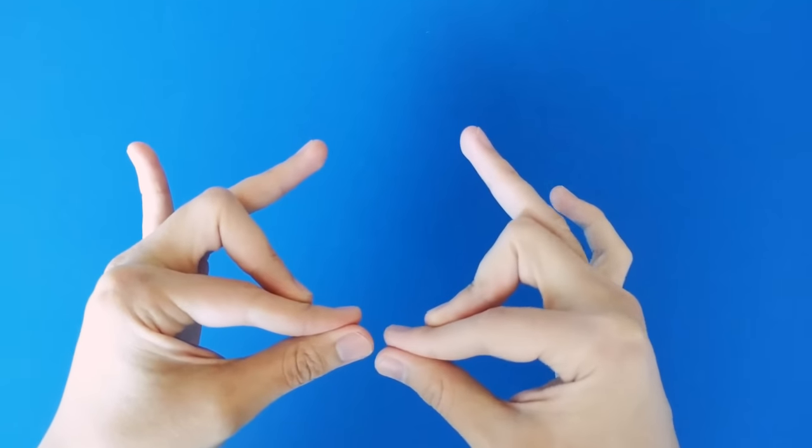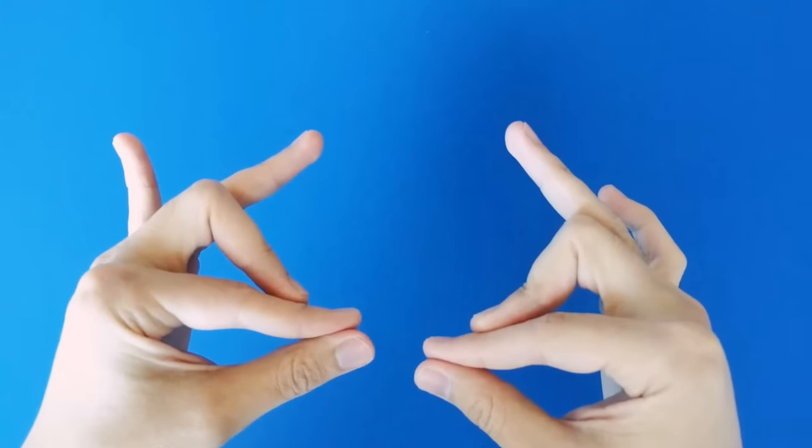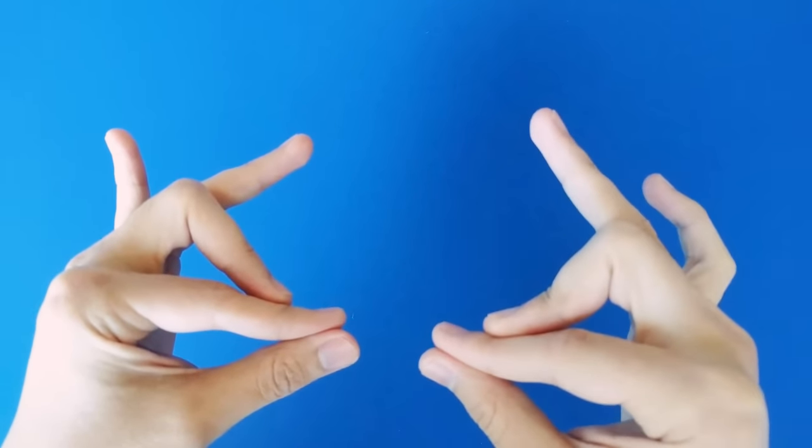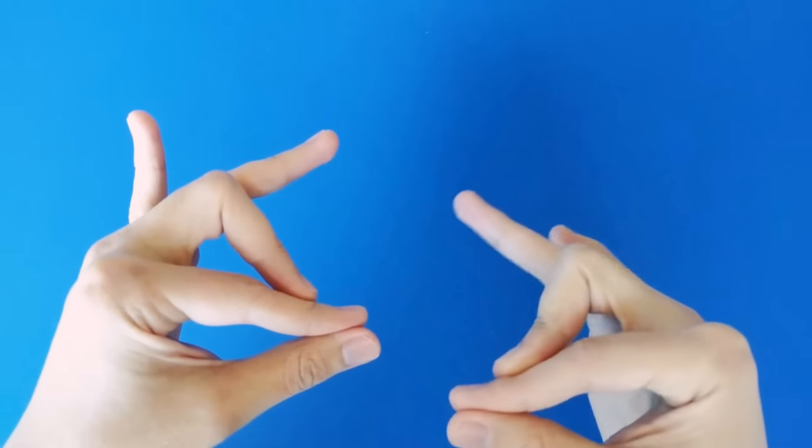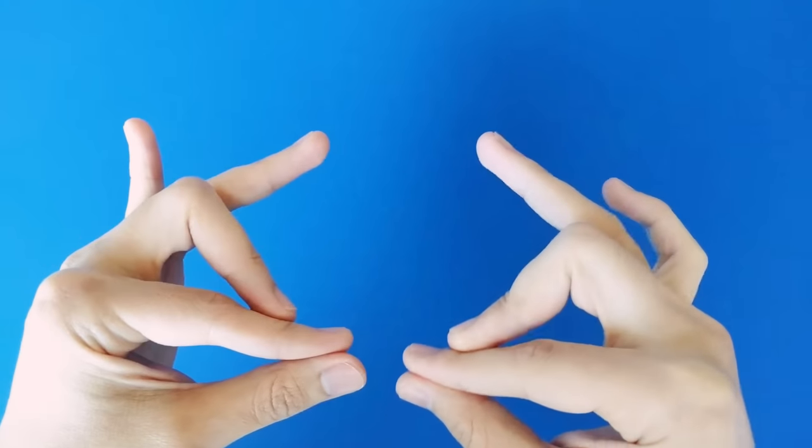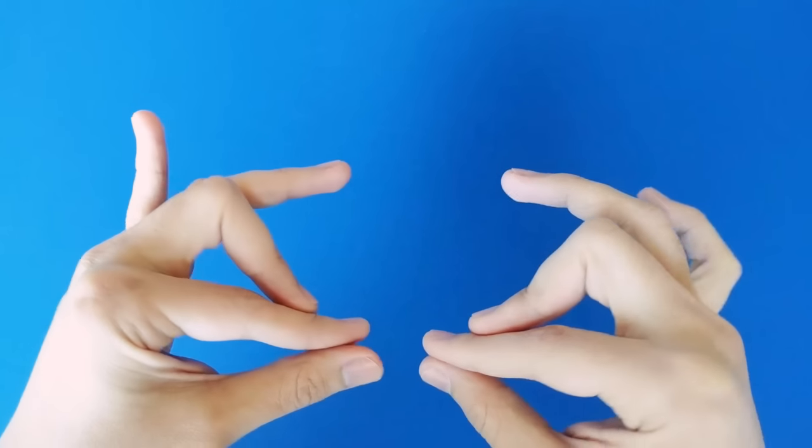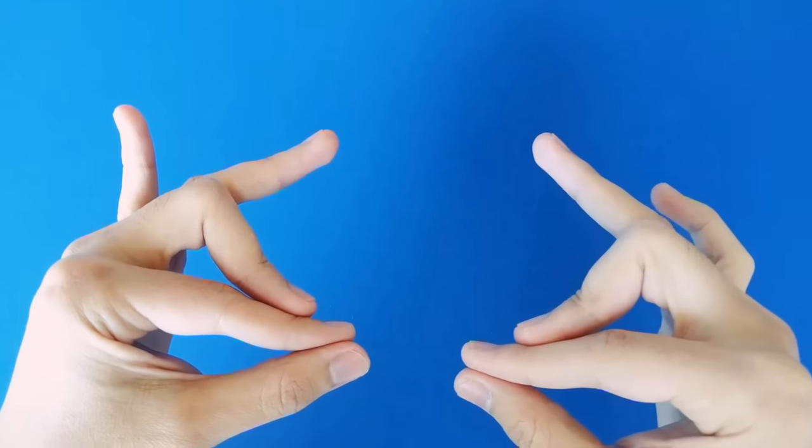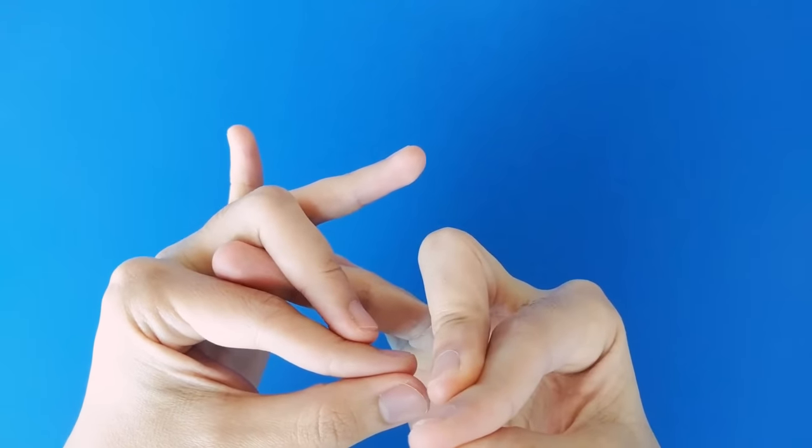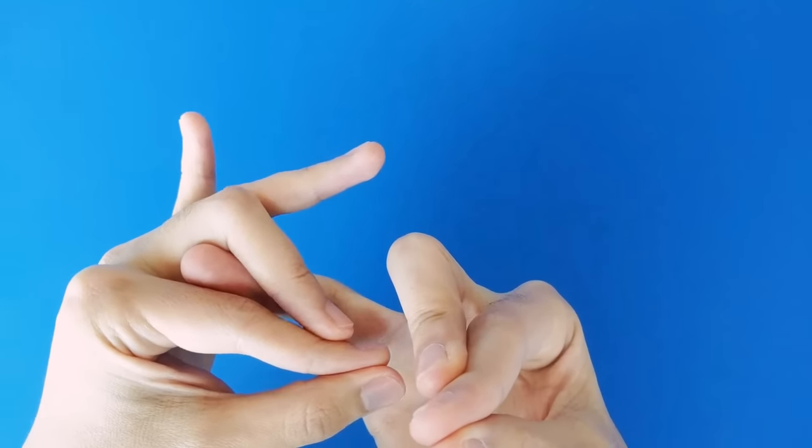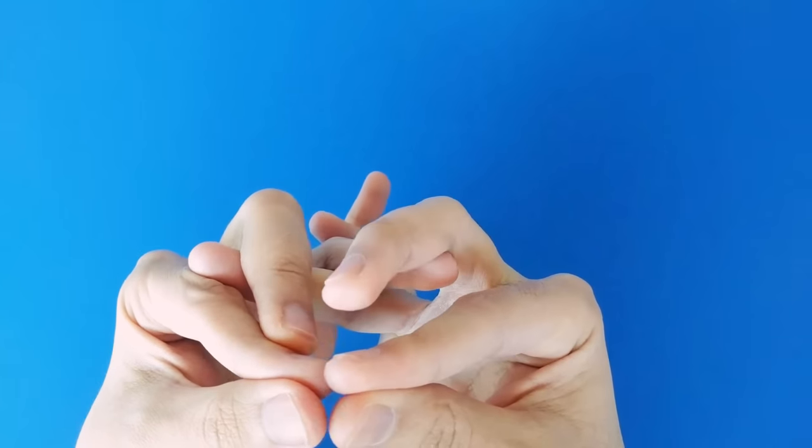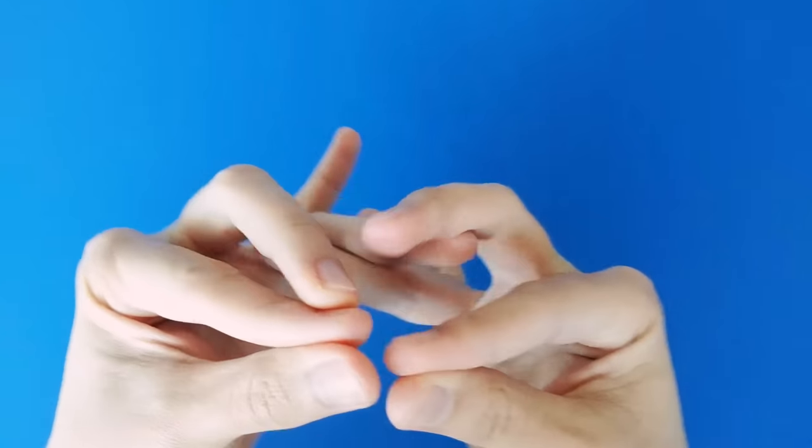Now the next step, you're gonna take the ring finger of one hand and stick it through the eye hole of the other hand. Each hand you've kind of made these two eye holes using your index and middle fingers. So you're gonna stick the ring finger through that hole of one hand, and you're gonna stick the other ring finger through the hole of the other hand.